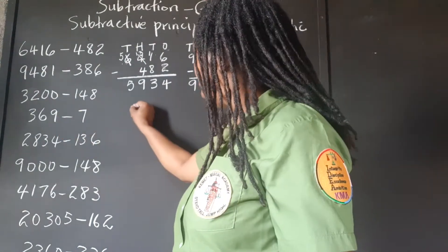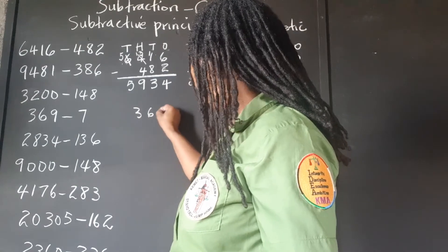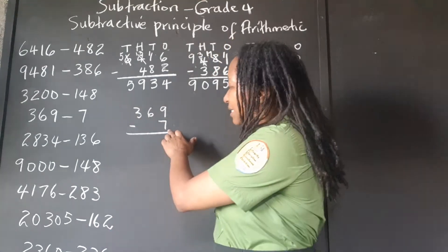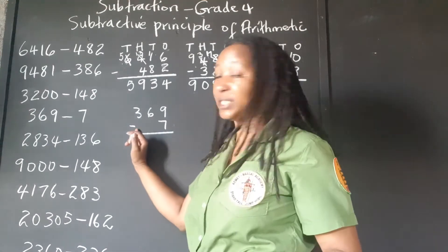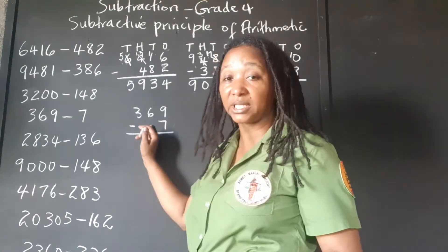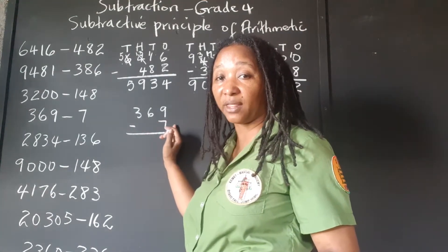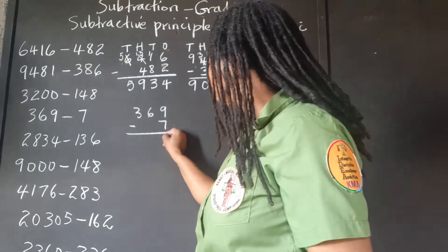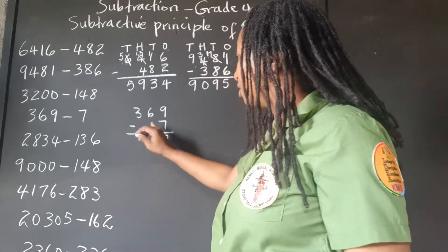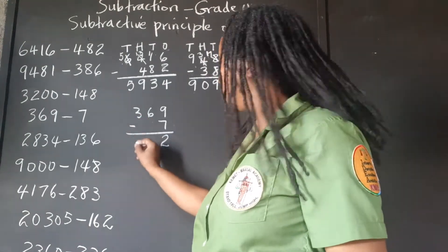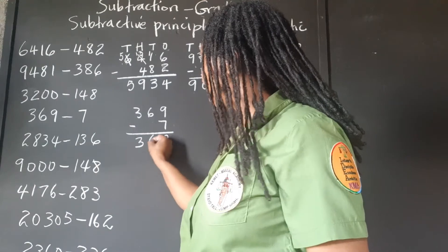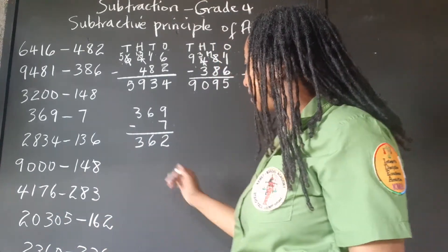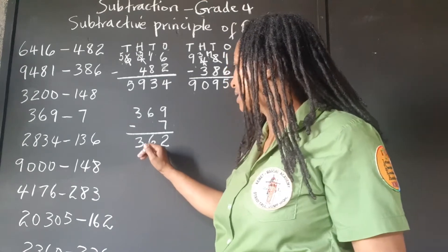369 take away 7. Remember, the 7 is 7 ones — we line it up with the ones, the units. 9 take away 7 is 2, and there's nothing under the 3 or the 6, so we simply bring them down. The answer is 362.